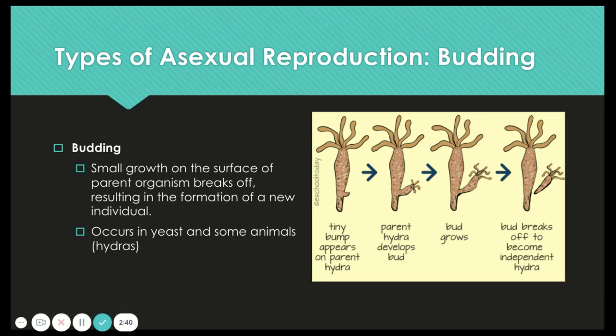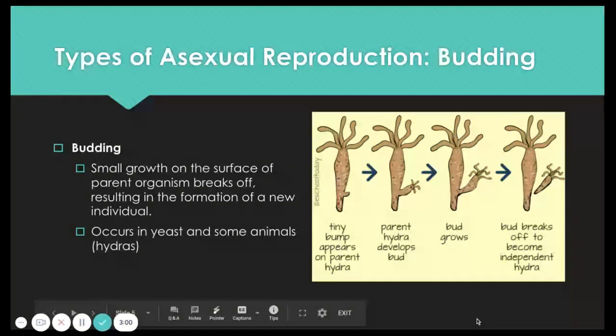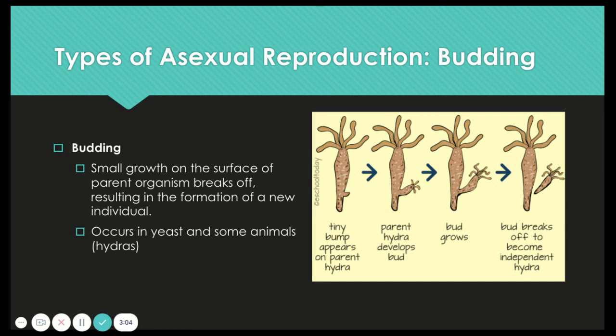Then we have budding. This is when a small growth on the surface of a parent organism breaks off and results in the formation of a new individual. As you can see on the right, we have an example of hydras. This also occurs in yeasts and a couple of other species. In a hydra, we have a tiny bump appearing on the right side of the parent that eventually develops into a bud. The bud continues to grow until it reaches a size at which it can sustain itself, and then it breaks off and becomes an independent hydra.